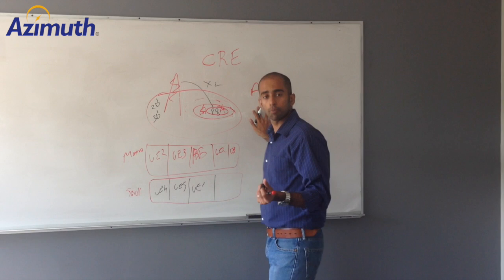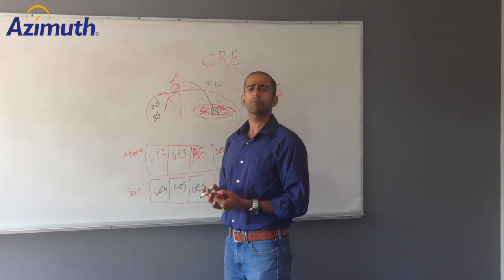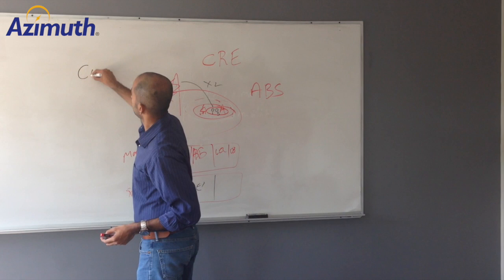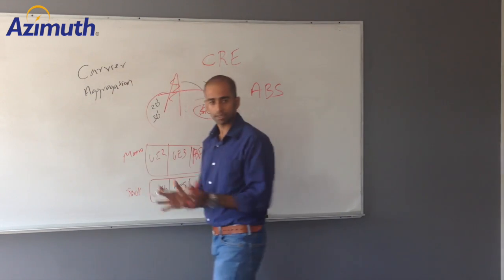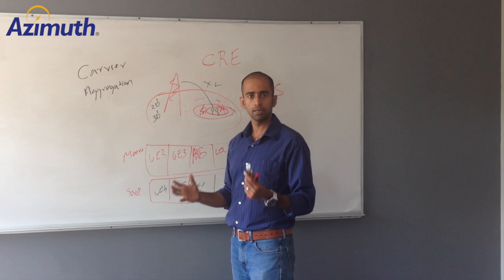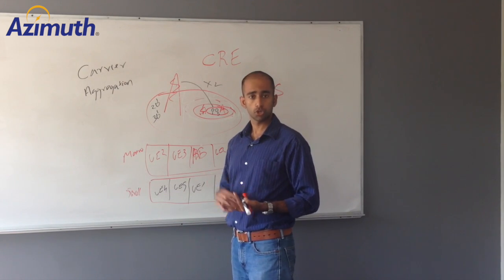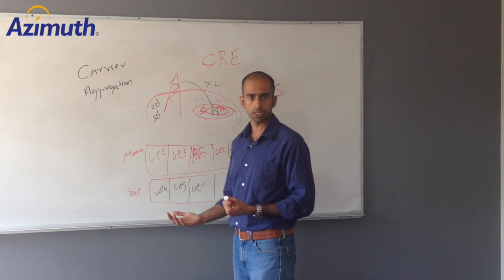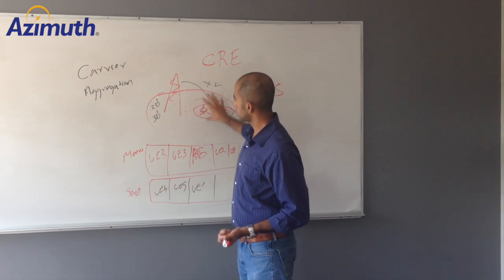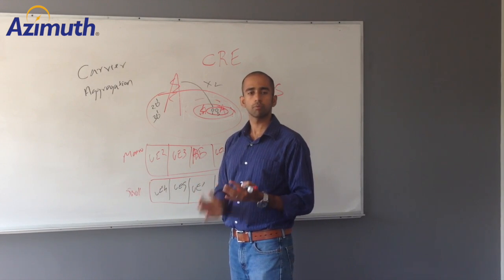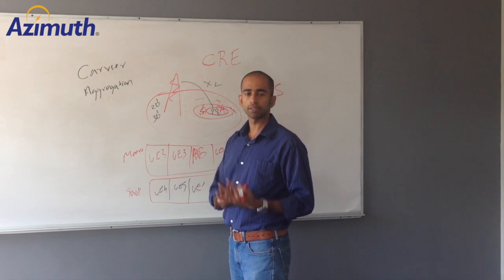ABS is a time-domain interference mitigation scheme. Cross-carrier scheduling is a frequency-domain mitigation scheme, typically used in conjunction with carrier aggregation. Carrier aggregation provides a fatter pipe to the device by aggregating two or more carriers. You have a P-cell — the primary cell carrying both control and data — and one or more secondary S-cells carrying just the data. With cross-carrier scheduling, the macro cell and small cell use the P-cell and S-cell on different frequencies, thereby mitigating interference from both control and data channels.